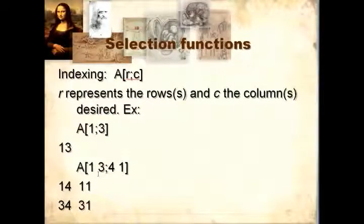Indexing can also work on matrices. You have to separate the rows and the columns by a semicolon. R represents the rows and C the columns. So for example, if you pick the first row and the third column, you get the element — in this case, 13. If we want to pick two rows and two columns, we will end up with a 2 by 2 matrix.